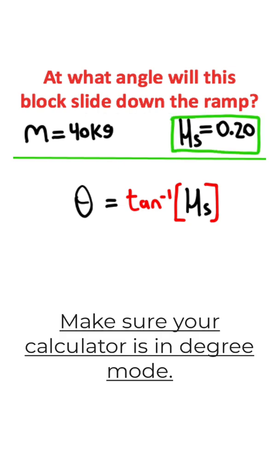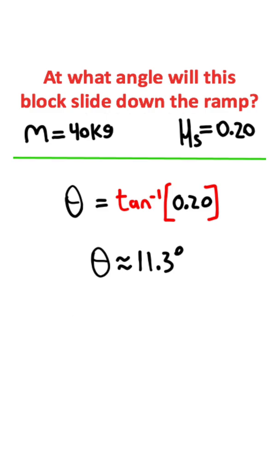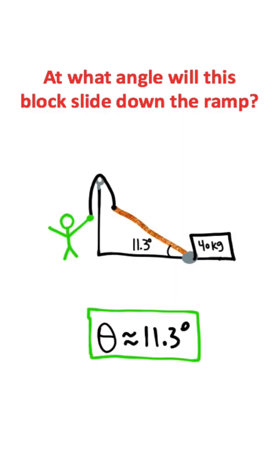Now I'm going to take this static friction coefficient and plug it in right here, and that's going to give me approximately 11.3 degrees. So once we've exceeded 11.3 degrees, this block's going to start sliding down the ramp.